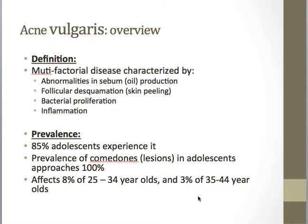If you think about gangrene — ischemia of a tissue — once there's access of that dead skin that isn't getting blood flow, anaerobic bacteria can colonize it. Once it does, that bacteria oxidizes and it appears black. I want you to remember that we have anaerobic bacteria, and if you provide it a nice medium in an environment without oxygen — like a clogged pore — it will grow and thrive.